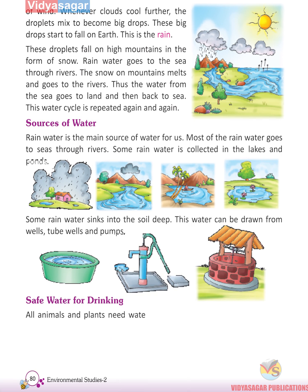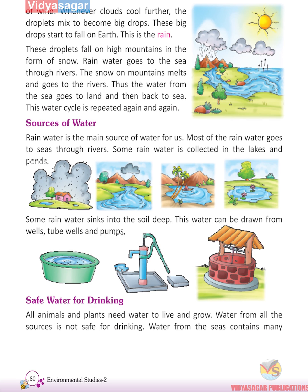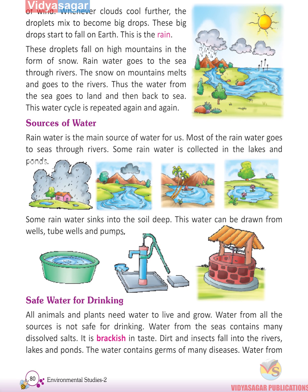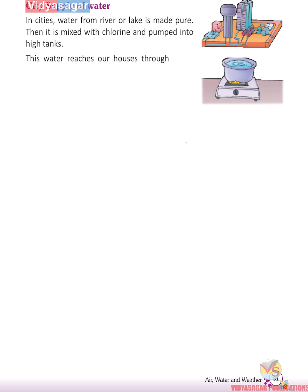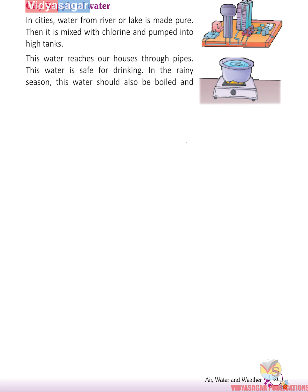Safe Water for Drinking: All animals and plants need water to live and grow, but water from all sources is not safe for drinking. Sea water contains dissolved salts and is brackish in taste. Dirt and insects fall into rivers, lakes, and ponds, and the water may contain germs of many diseases. In cities, water from rivers or lakes is purified, mixed with chlorine, and pumped into tanks before reaching homes through pipes. In the rainy season, this water should also be boiled and filtered, as boiling kills germs.